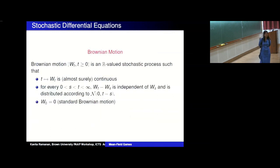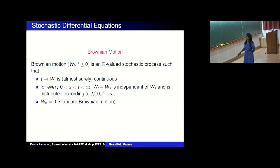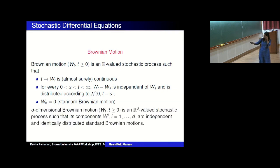A quick recap for those who don't know stochasticity: Brownian motion is just a random path whose increments are normally distributed with variance T minus S, and the increments are independent and stationary. That's all you need to know about Brownian motion. A D-dimensional Brownian motion is simply each coordinate taken as independent Brownian motions.